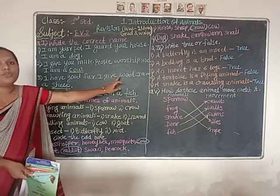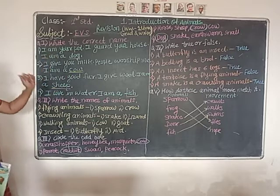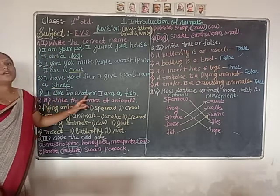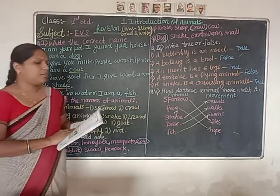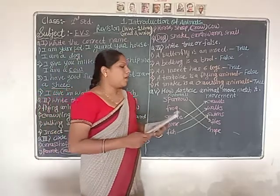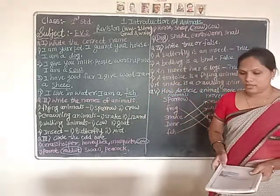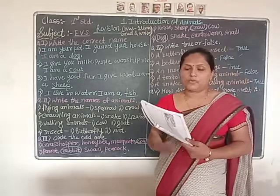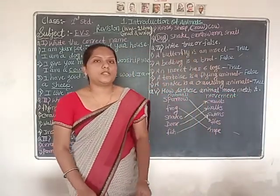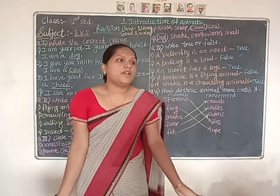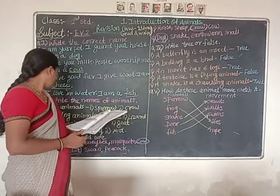Let's recap the riddles: 'I have woolly fur, I give you wool' — sheep. 'I give you milk, people worship me' — cow. 'I am your pet, I guard your house' — dog. 'I live in water' — fish. Next, they are given — write the names of some birds. I told you before: pigeon, macaw, parrot, duck, swan, woodpecker, kingfisher, sparrow. All these are birds. Birds are animals with beak and wings — they fly in the sky.